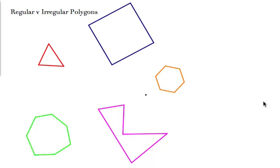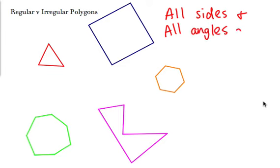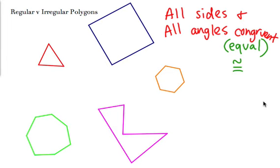Our last topic is regular versus irregular polygons. A regular polygon means all the sides and all the angles are congruent — congruent is just a fancy geometry word for equal, meaning every part is the same. It has a symbol: an equal sign with a little wave on top. Looking at the red triangle, the sides look close but one looks a little longer and the angles aren't quite the same, so this is not a regular polygon.